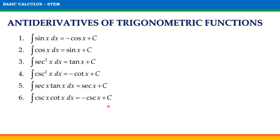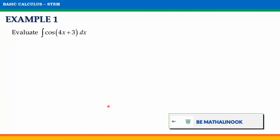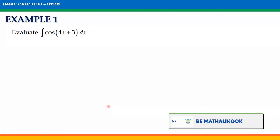We will be using these theorems of antiderivatives of trigonometric functions as we solve for the antiderivatives of some functions using the substitution method. Let us take this first example: evaluate the antiderivative of cosine of (4x plus 3) with respect to x.